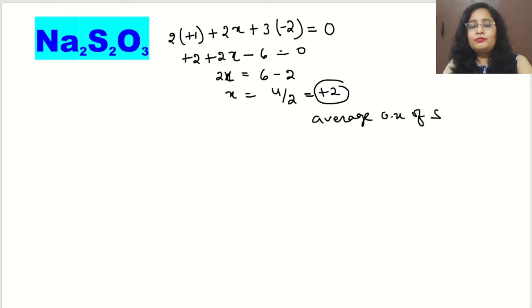So if there is a question to find the average oxidation state of sulfur in Na2S2O3, we will apply this way and get the answer +2. But when they're asking about the two different sulfur atoms, to give the separate oxidation state of both sulfurs, then what we will do?